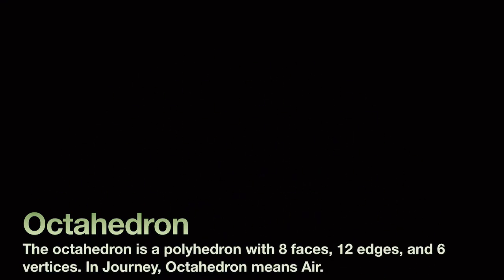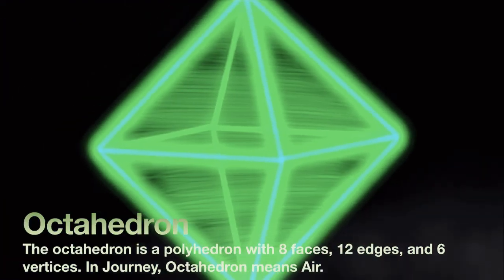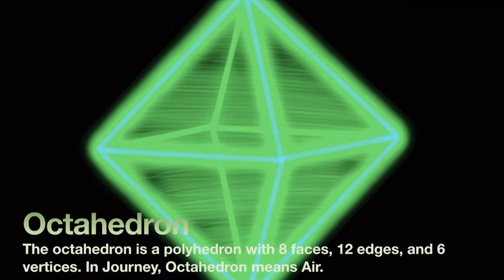The octahedron is a polyhedron with eight faces, twelve edges, and six vertices. In Journey, octahedron means Air.